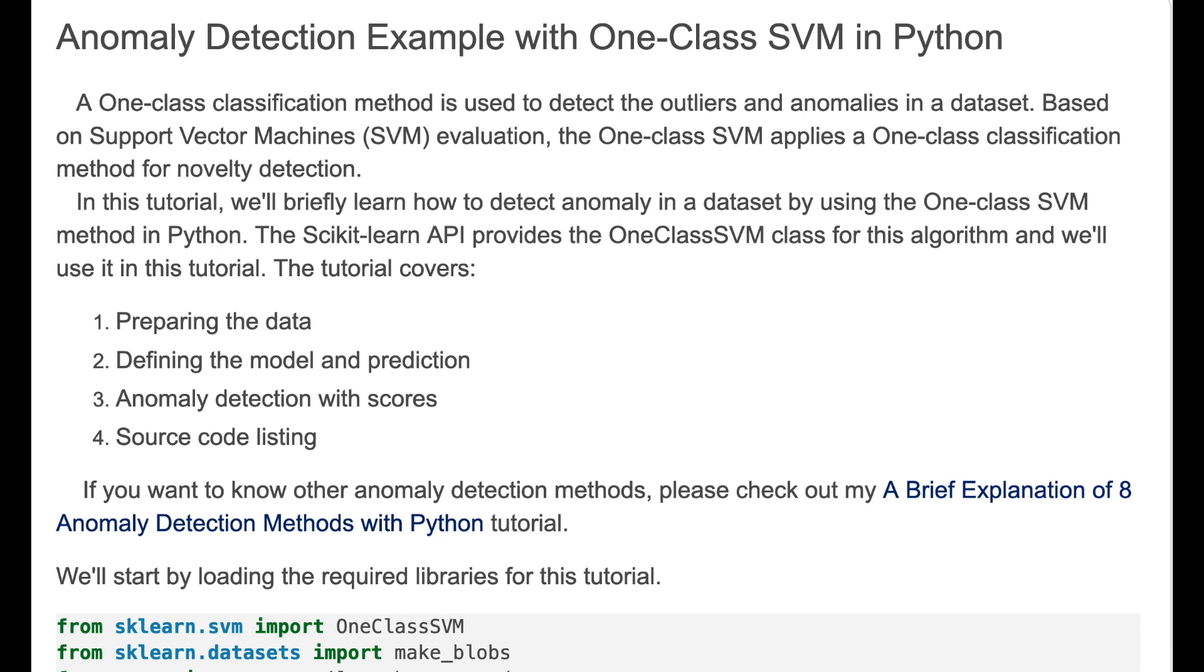The key idea behind One-Class SVM is to find a hyperplane that separates the majority of the data from the rare or abnormal data points.